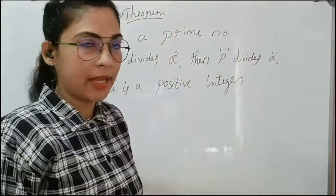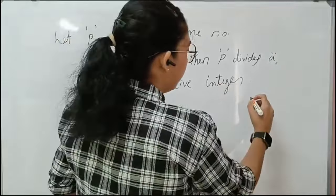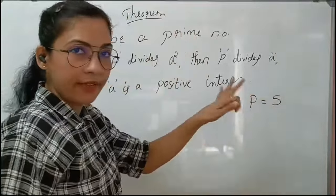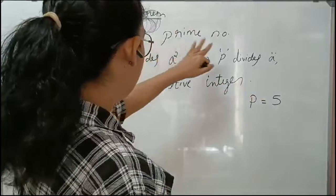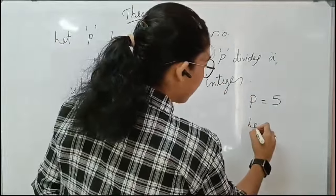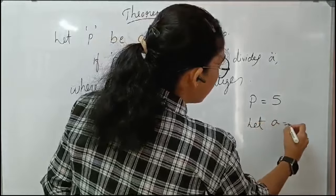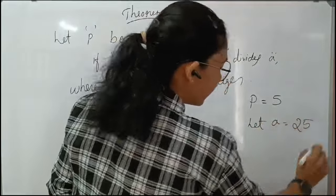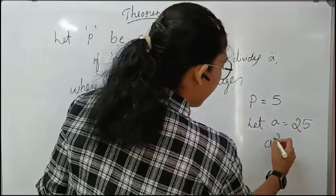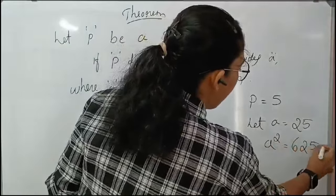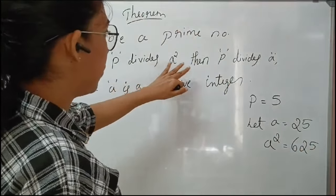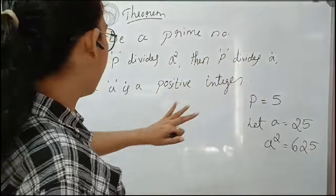Let me show you by taking an example. Let P equal 5. We know that 5 is a prime number. Let P be a prime number; if P divides A squared — let A equal 25. Then A squared equals 625. So if P divides A squared, then P divides A.